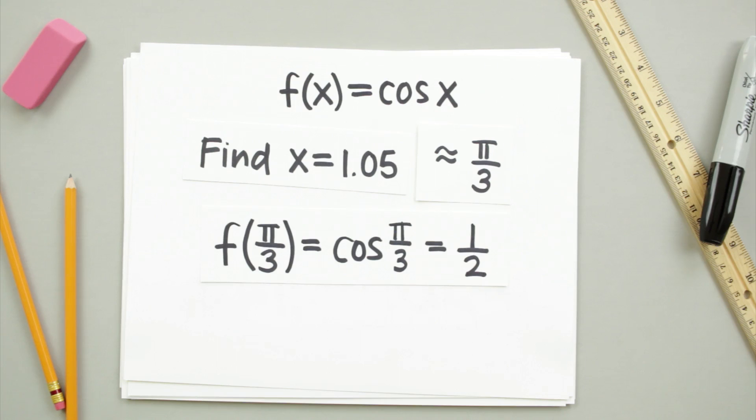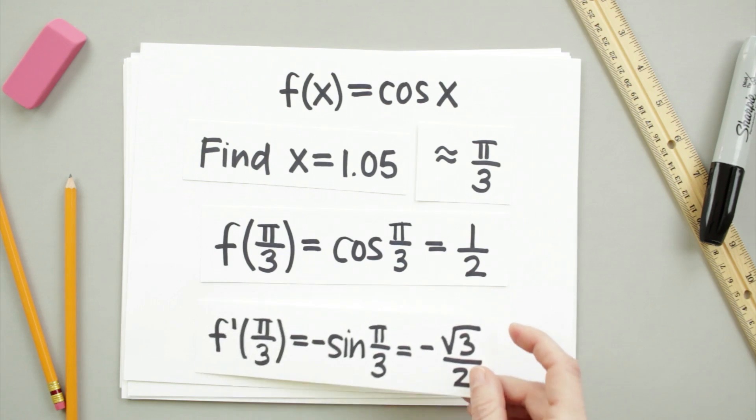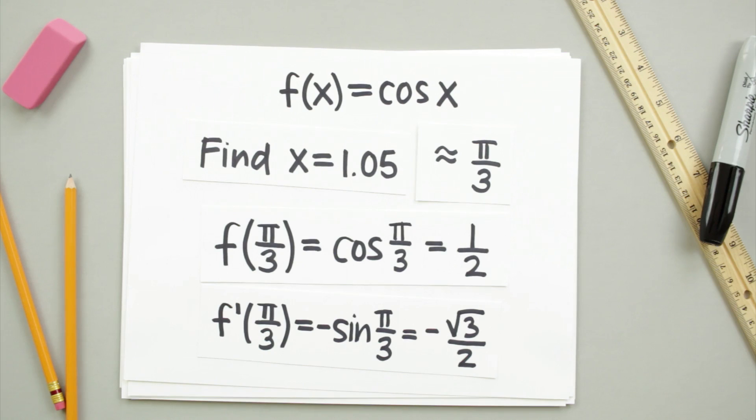We also need to know the derivative of the function at x equals pi over 3. The derivative of cosine is negative sine, so f prime of pi over 3 is equal to the negative square root of 3 over 2.